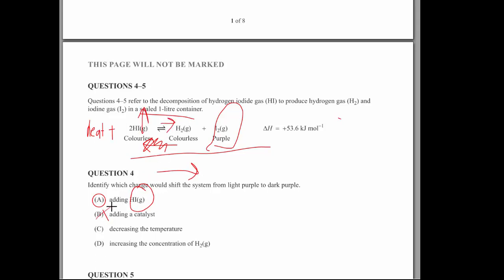And in the catalyst, we'll just make it each of every and faster. Decreasing the temperature will push it over here to make it light purple. So that can't be right. Increasing the concentration of H2 against pushing it in the wrong direction. We're trying to make it more purple. So definitely A.